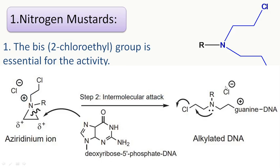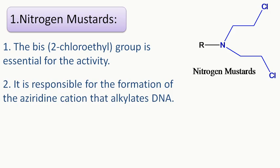Next, the chloro from the second chloroethyl arm leaves as a leaving group, the nitrogen's lone pair attacks that carbon, and another aziridinium ion is formed. This second aziridinium ion can be attacked by the N7 nitrogen of another adenine or guanine molecule, alkylating another portion of DNA. When the DNA is alkylated at both sites — cross-linked — subsequent processes lead to cell death. Without formation of the aziridinium cation, it cannot alkylate the DNA.